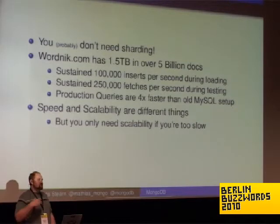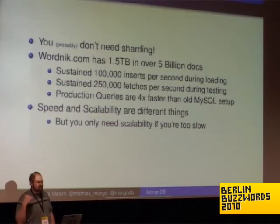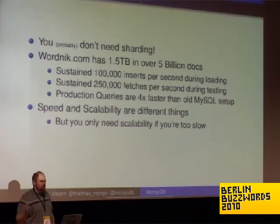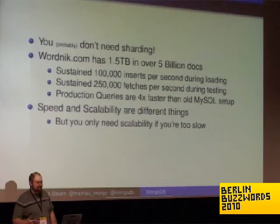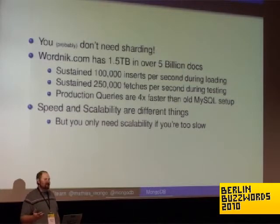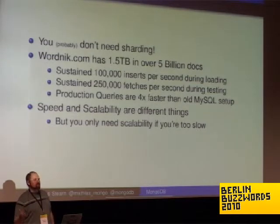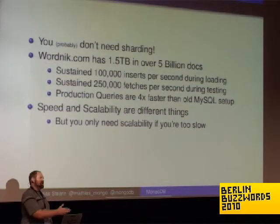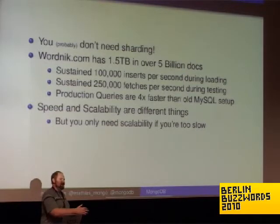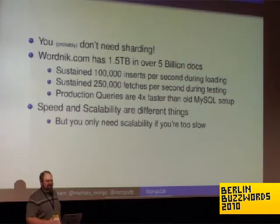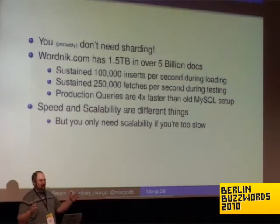They did a nifty transition where at runtime you could connect to either database to do queries, enabling a seamless transition. During a load test to make sure Mongo could keep up, they were able to do 250,000 ID lookups per second. At that point Mongo wasn't fully loaded, but their Java boxes were, and they decided it wasn't worth optimizing further. This is why I'm saying you probably don't need sharding.